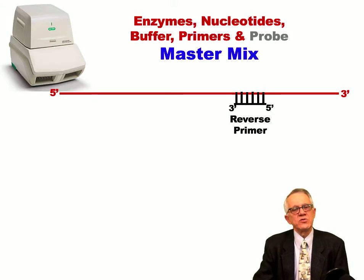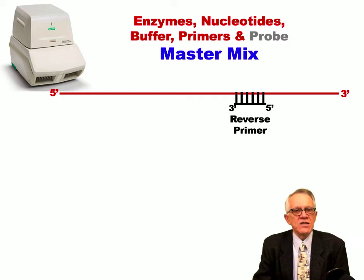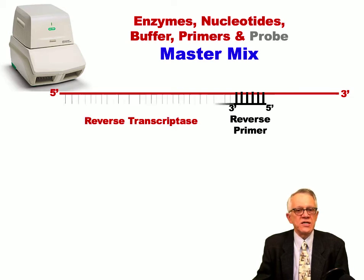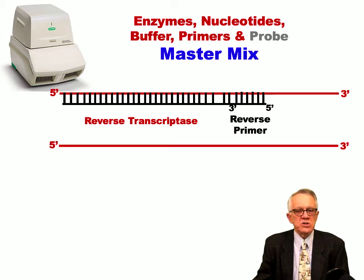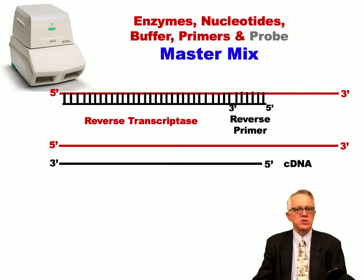The qPCR reaction utilizes enzymes, nucleotides, buffer, and primers and probe — all these things can come together in one mix called the master mix. The first step is to utilize the reverse transcriptase enzyme and primers to reverse transcribe the RNA into cDNA, generating a more stable template. Here is the original template of the RNA and the reverse-transcribed cDNA.